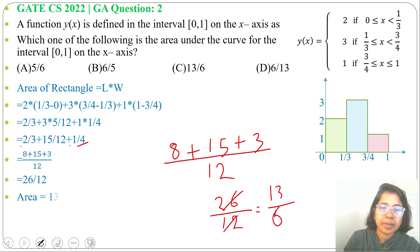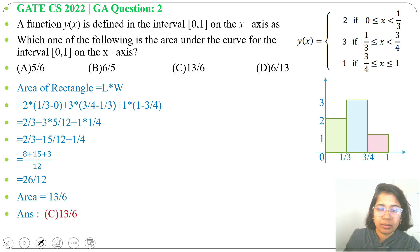13/6 is present in option C. So answer will be option C. So area is 13/6 for the curve of interval 0 to 1 on the x-axis. This whole area is 13/6.